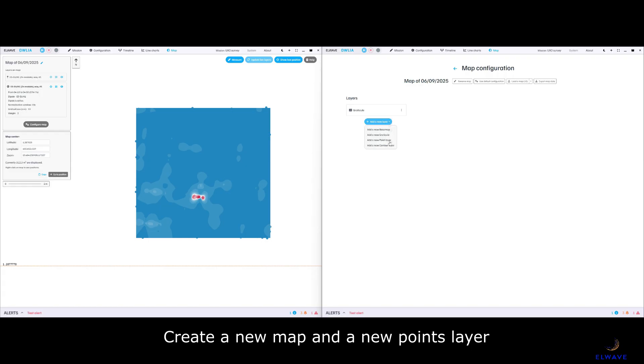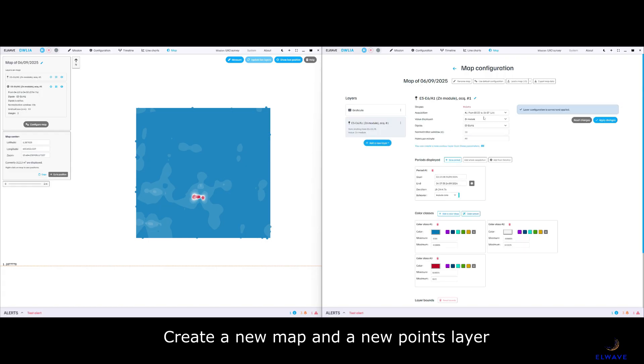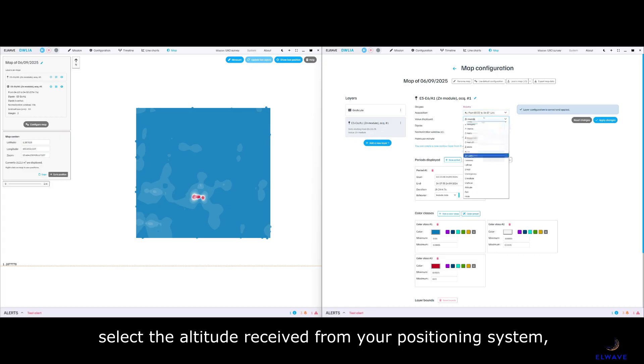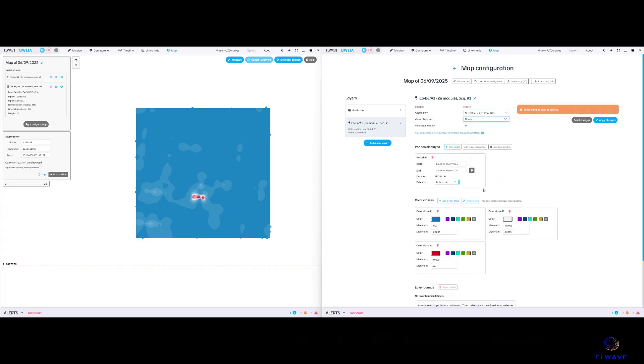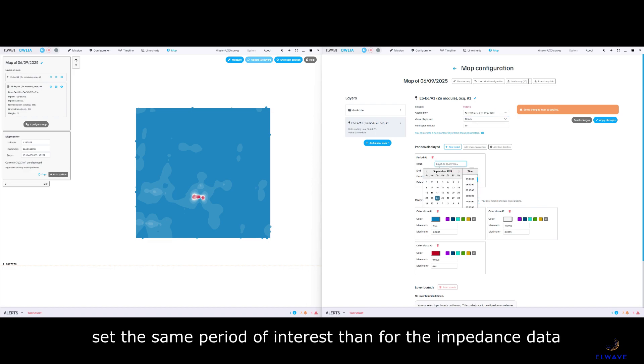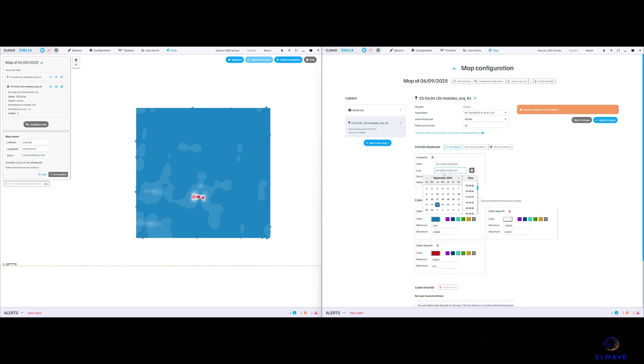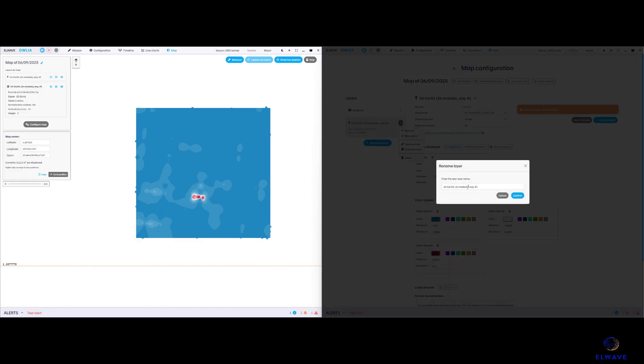Create a new map and a new points layer. Select the altitude received from your positioning system. Set the same period of interest as for the impedance data. You can change the layer names.